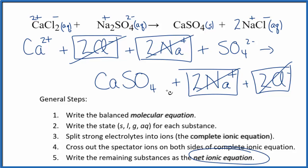What's left is the net ionic equation for CaCl2 plus Na2SO4. I'll clean this up, write the states, and we'll have our net ionic equation.